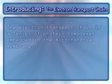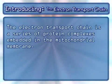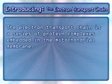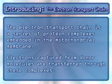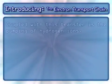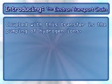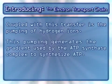The electron transport chain is a series of protein complexes embedded in the mitochondrial membrane. Electrons captured from donor molecules are transferred through these complexes. Coupled with this transfer is the pumping of hydrogen ions. This pumping generates the gradient used by the ATP synthase complex to synthesize ATP.